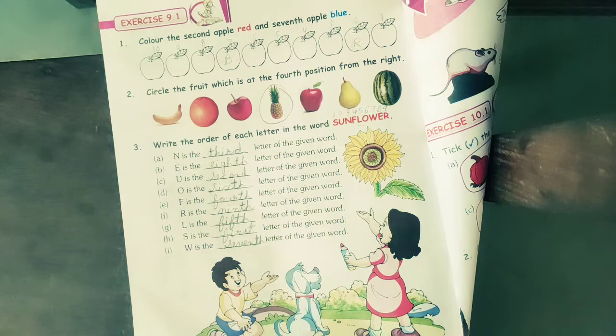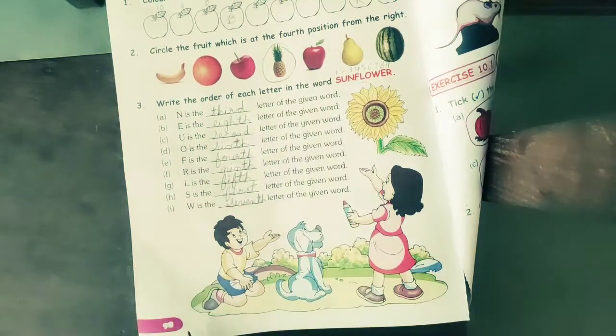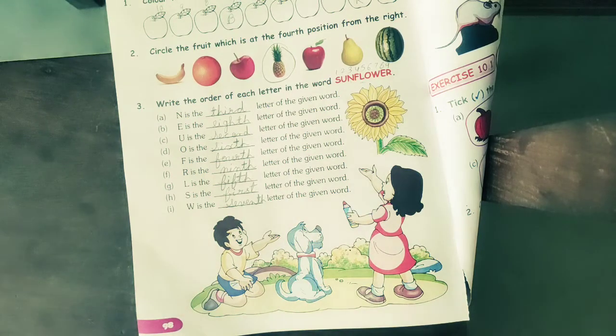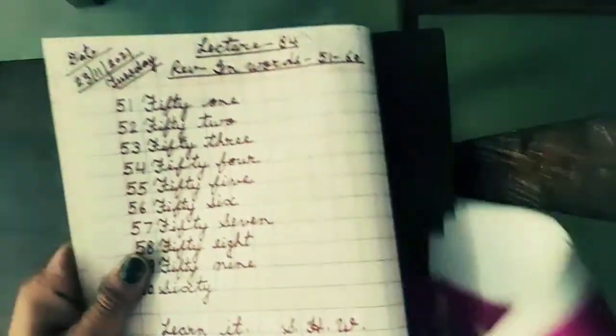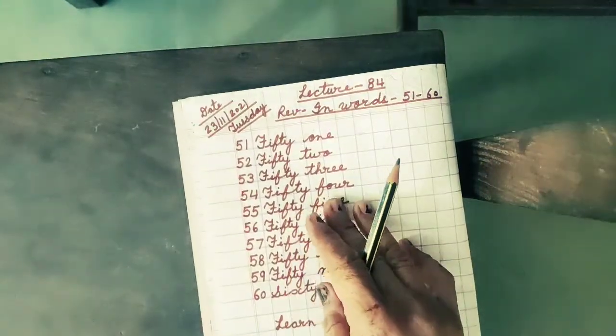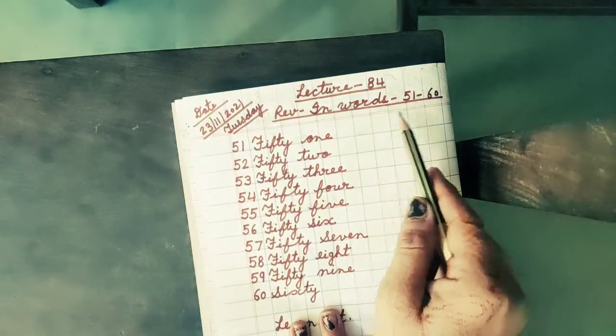You have to do the page number 98 complete. Students, now come to open your mass notebook. Today I am going to teach you in mass book the numbers name. Numbers name means the spelling of the numbers.